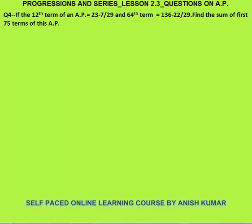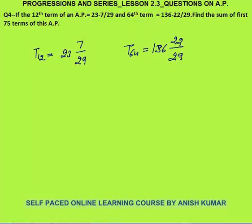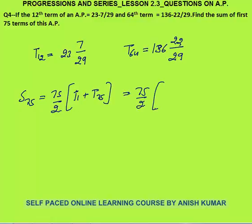Question 4: If the 12th term of an AP is 23 and 7/29 (mixed fraction) and the 64th term is 136 and 22/29, we need to find the sum of the first 75 terms. Sum of 75 terms equals 75 by 2 times (first term plus last term). I don't know the 1st and 75th terms, but from the basics, I can use t12 plus t64 instead.